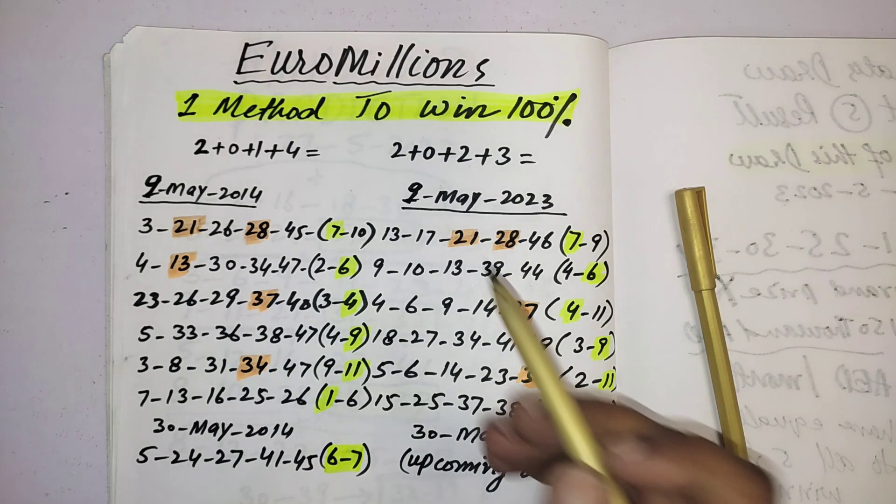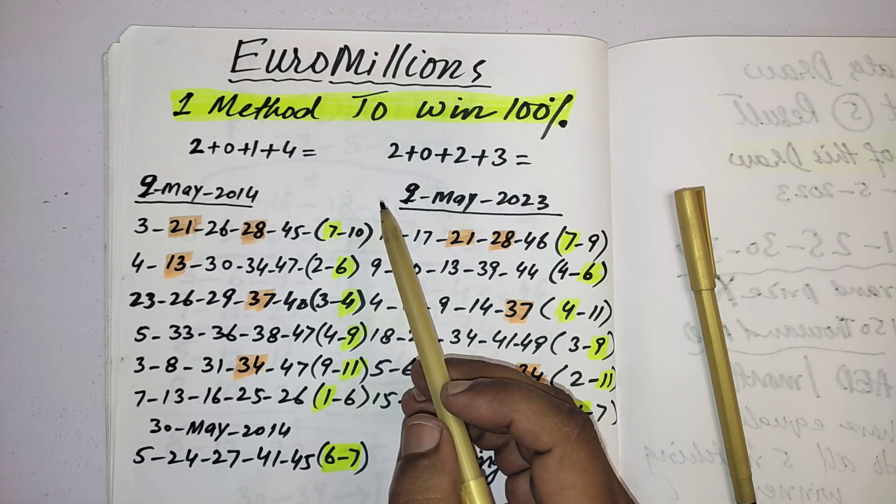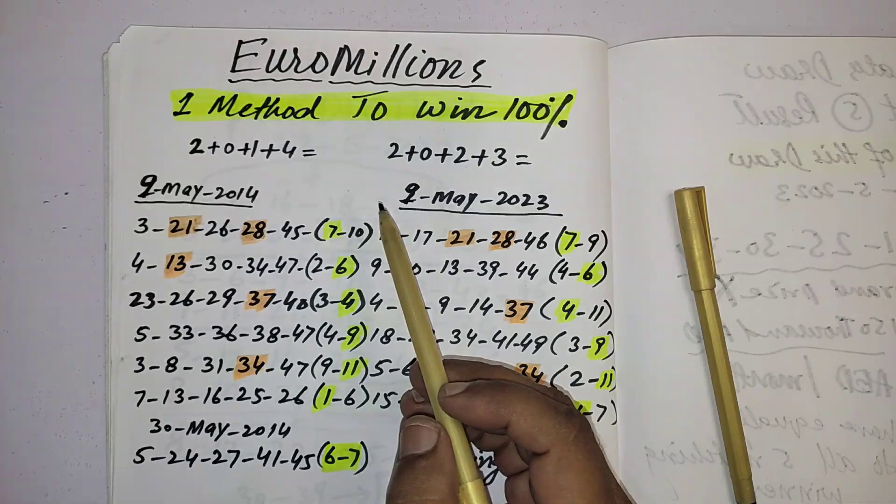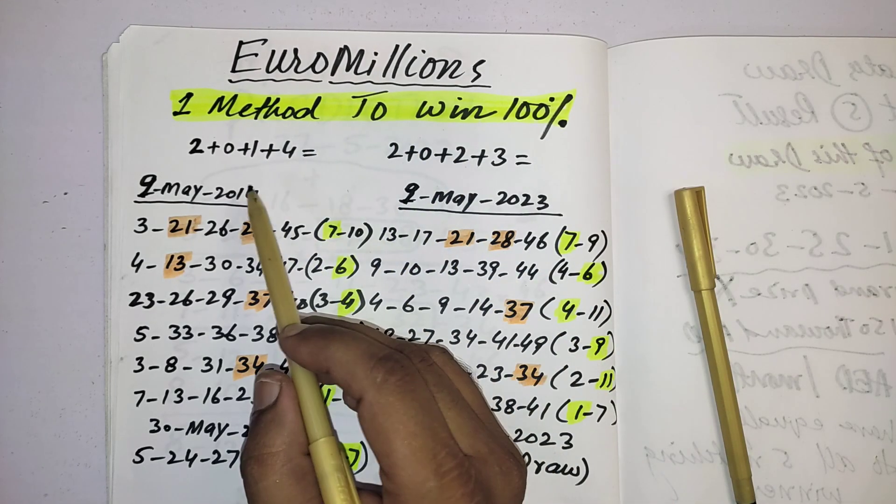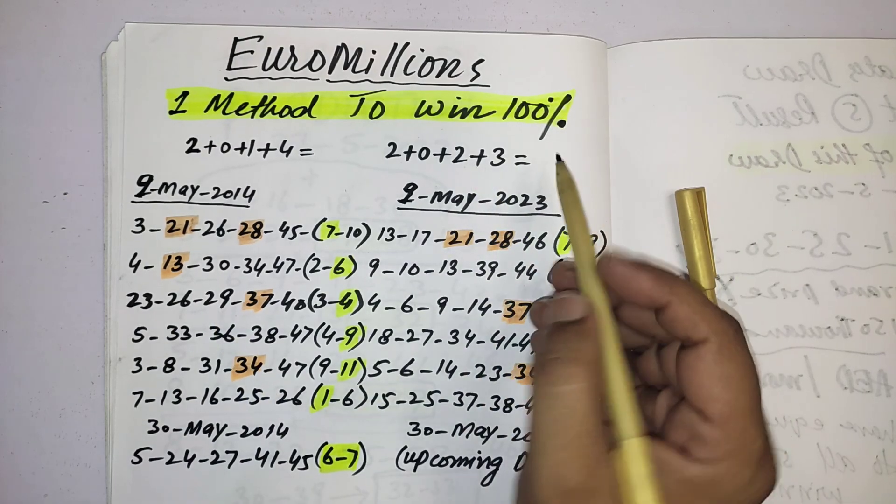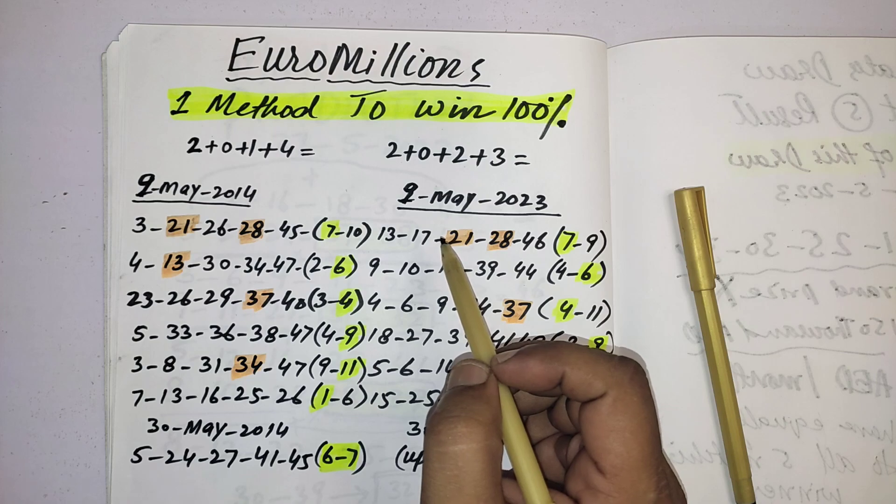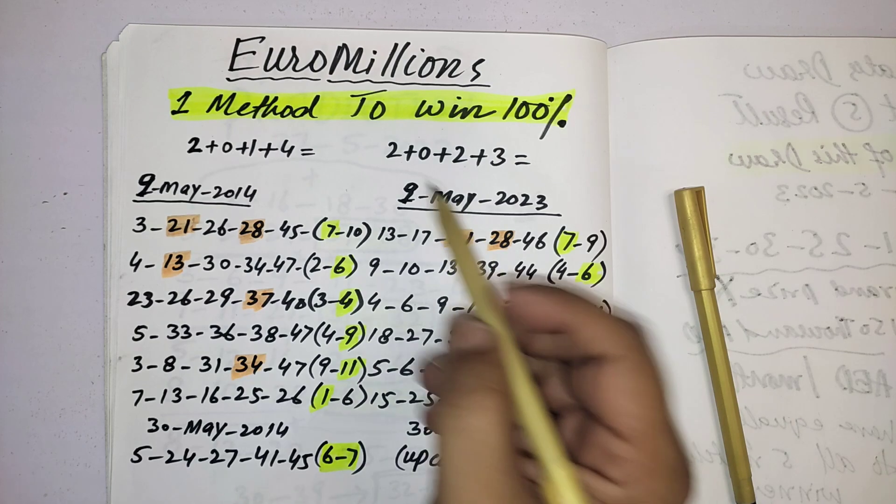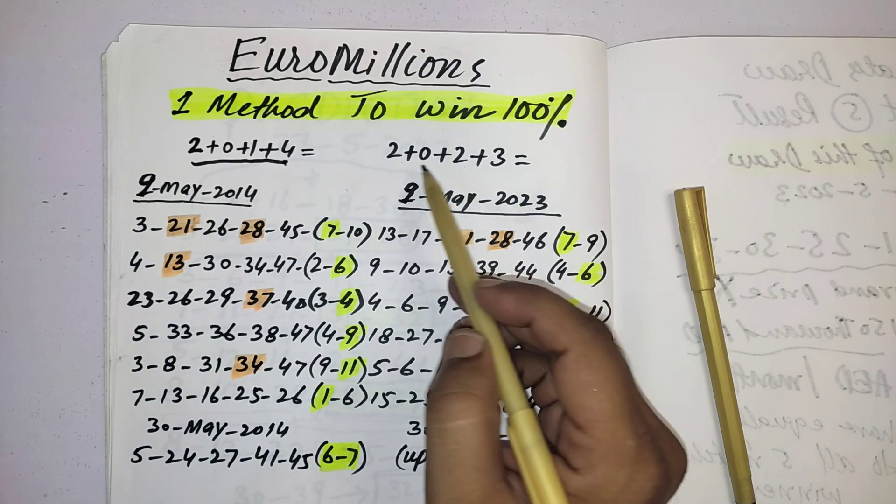Hi guys, in every lottery the numbers come according to the attraction of the numbers. I'll show in EuroMillions how the numbers are attracting from past history. Attraction has many varieties like total sum are same, dates are same, patterns are same.